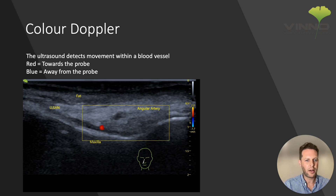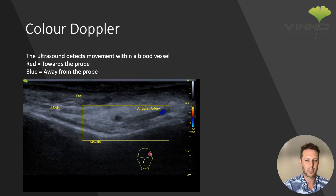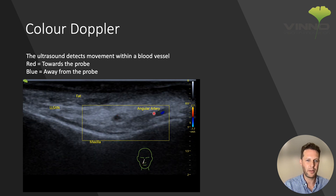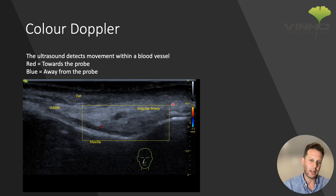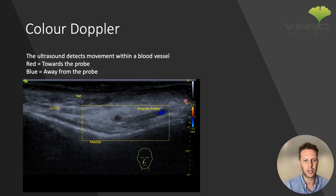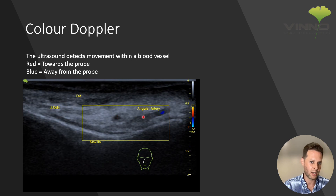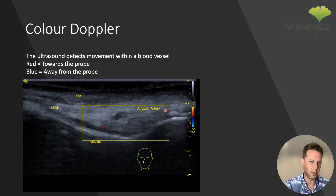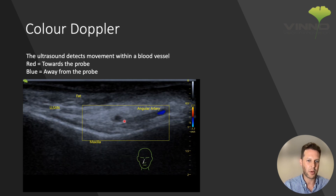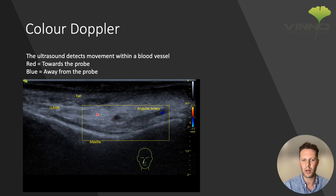In this image in the mid-face region, just lateral to the nose, this is the angular artery. Even though we can see some of it is red and some of it is blue, it is actually the same vessel. The angular artery is going down in one direction, so that part is blue because it's moving away from the probe, and the other part is red because it's coming back up towards the probe. That's the reason for the red and the blue.